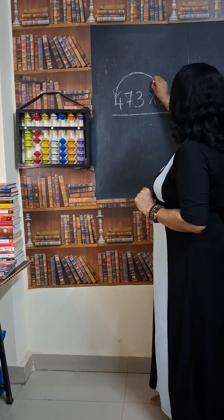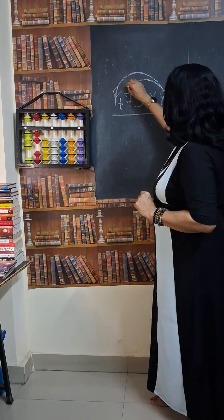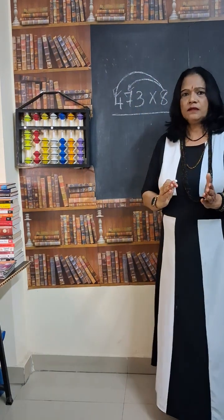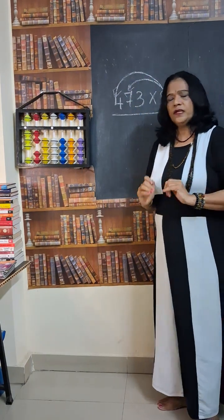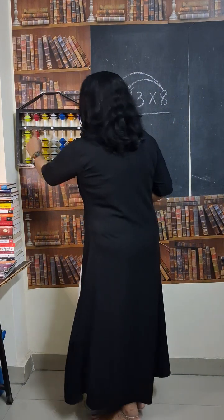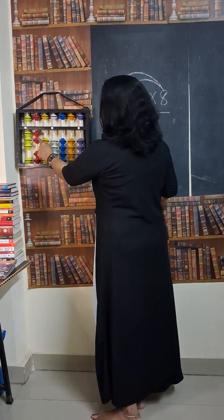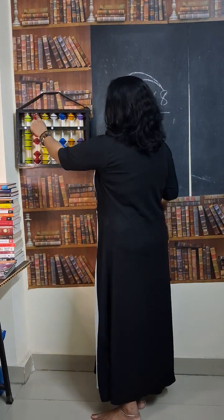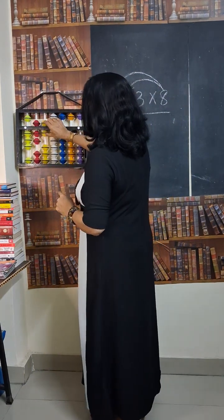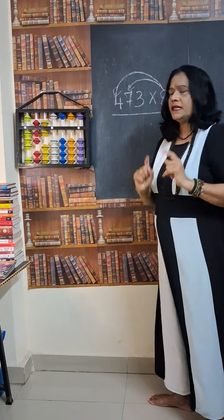Then multiply 8 into 7 — that is the second step. 8 times 7 is 56. We have to continue from where we stopped. 56 — that is the second step.